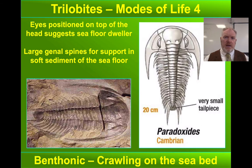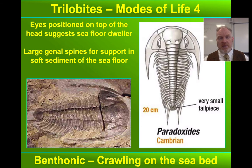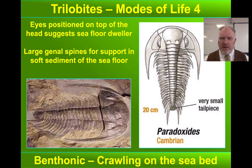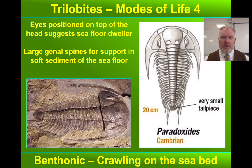This is Paradoxides. We think it was what we call benthonic, or bottom-dwelling — it crawled around on the sea floor. This one has eyes, so clearly being able to see was important, meaning it lived in a zone where there was light. Like Trinucleus, it had a large cephalic fringe and genal spines — perhaps to spread its weight over soft mud. The pygidium is very small, perhaps not used for pushing itself around in the water. With the eyes on top of the head, it suggests it was low down in the water column, looking up and around for predators.